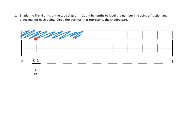Count by tenths to label the number line using a fraction and a decimal for each point. Circle the decimal that represents the shaded part. Well, let's see. So they've done the first part for me. They counted this far and they said that's one tenth. Does that make sense? Let's see: one, two, three, four, five, six, seven, eight, nine, ten. Right, and we got to this point. This would be one of the tenths. So I see where they got that. That would be one tenth.